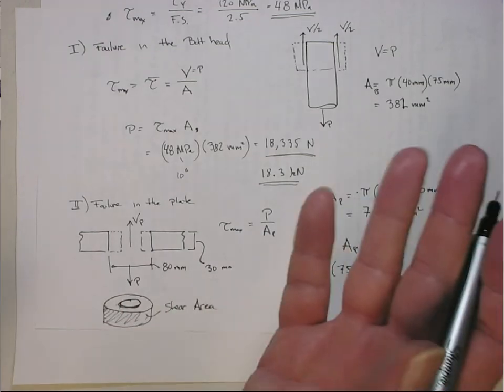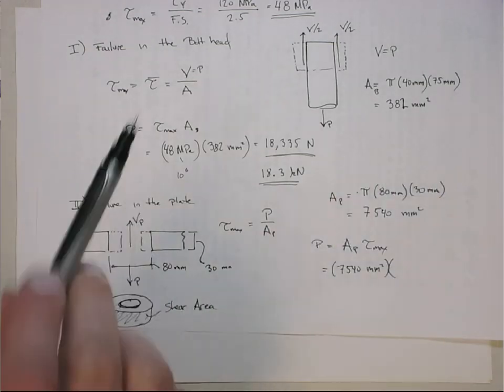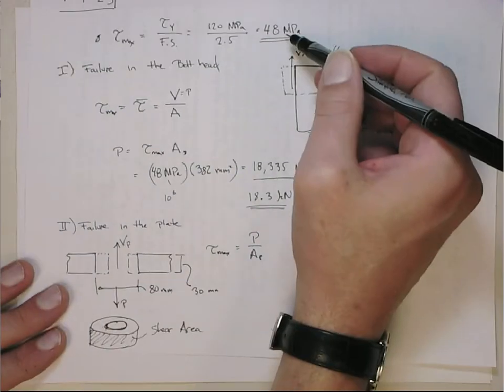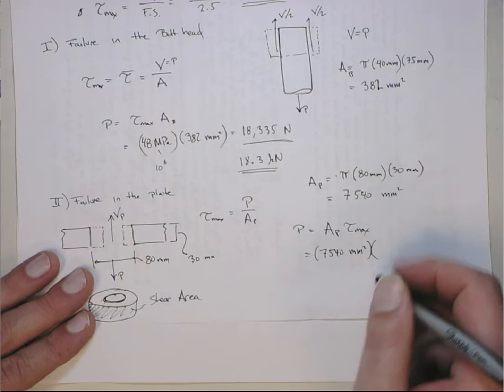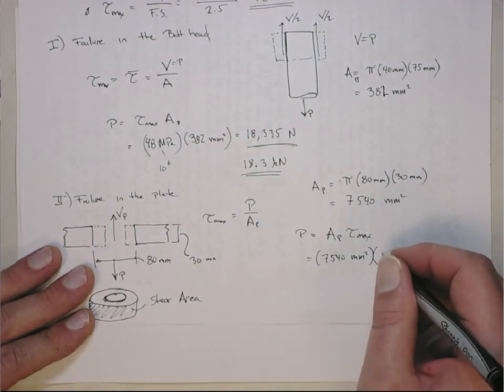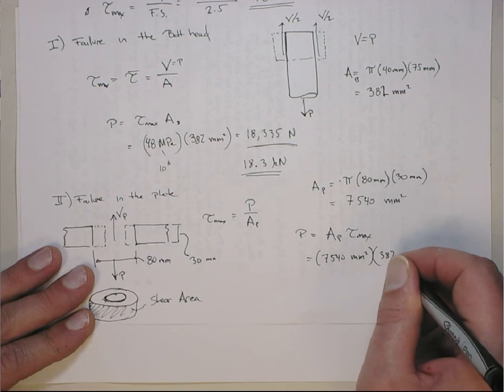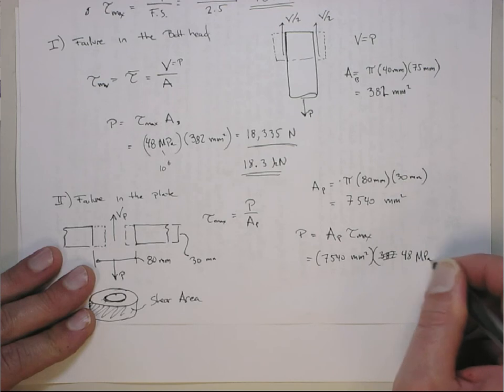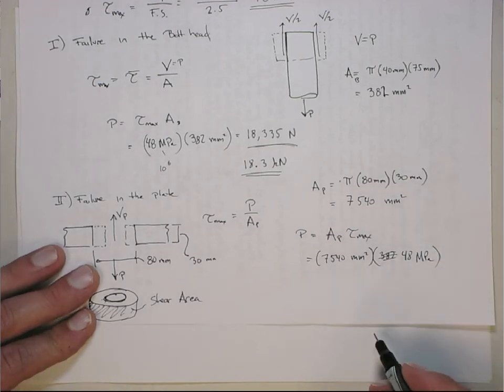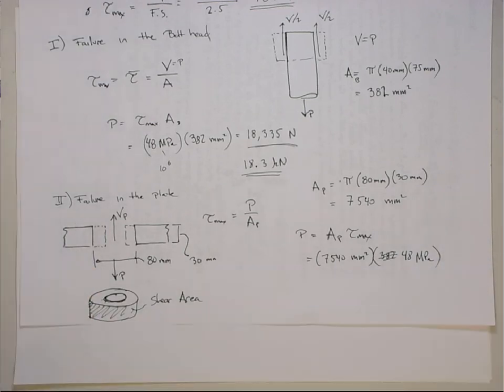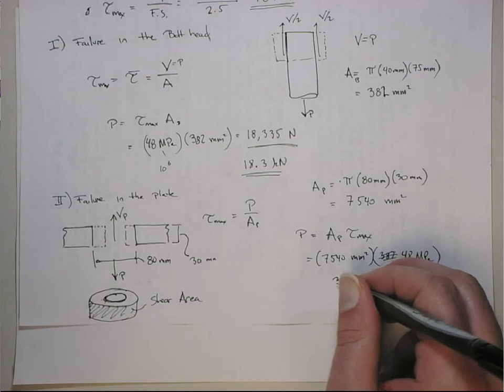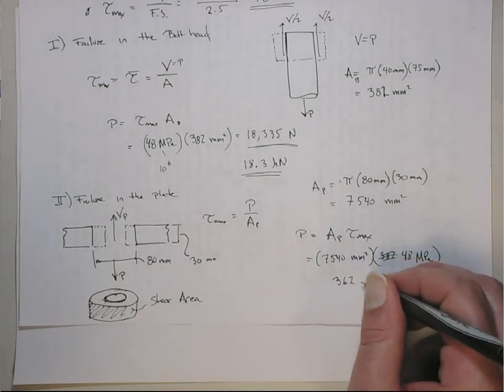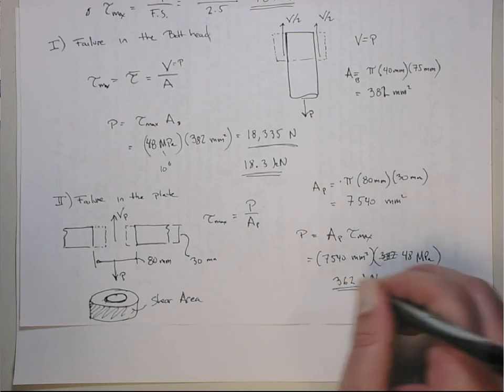And so this will actually have to be the limiting one, but let's go through the calculation. So again, we want to find P, the P_max, so P_max is going to be the area, the shear area times the maximal allowable stress. So that's the 7540 millimeters squared. The τ, the maximum shear is the same as before because it says it's made out of the same material. Often it's not. The plate might be aluminum, the bolt might be steel, and you would have to obviously use, you could use the same factor of safety, but this number would be dropped because you would have a different yield. So this is 48 megapascals. Again, the mega cancels out with the millimeters squared, giving me newtons. And this will come out to be a bigger number. So we multiply this by 48, and this is 362 kilonewtons.